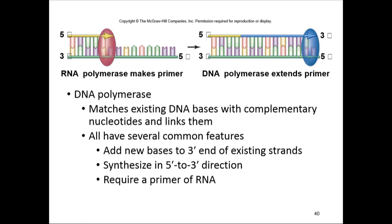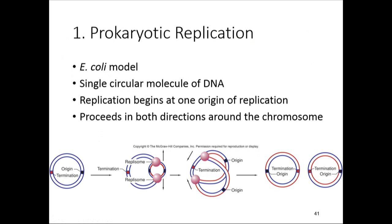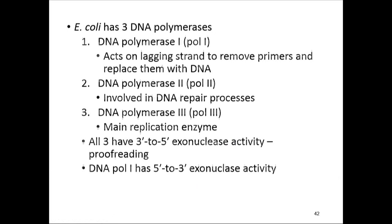DNA polymerase matches up A's, G's, C's, and T's by adding new nucleotides to the three-prime end, always moving in the five-prime to three-prime direction, and it requires a primer. In prokaryotes, chromosomes are circular, so replication begins at an origin and goes in both directions until it reaches a termination point, producing two circular chromosomes.